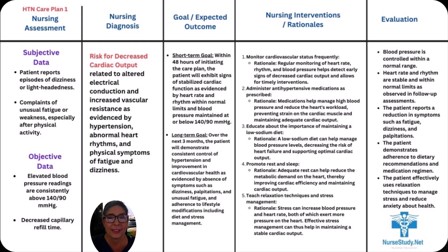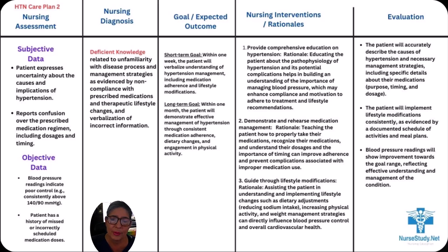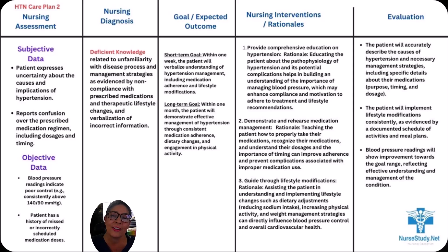Our second care plan is deficient knowledge. The subjective data: the patient expresses uncertainty about the causes and implications of hypertension, and reports confusion over the prescribed medication regimen including dosages and timing. The objective data: blood pressure readings indicate poor control — above 140 over 90 mmHg — and the patient has a history of missed or incorrectly scheduled medication dosages, which happens frequently, especially with the older population. The nursing diagnosis is: deficient knowledge related to unfamiliarity with disease process and management strategies, as evidenced by noncompliance with prescribed medications and therapeutic lifestyle changes and verbalization of incorrect information.